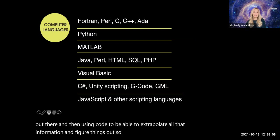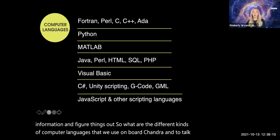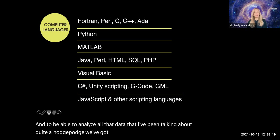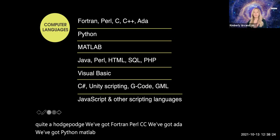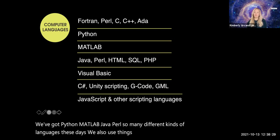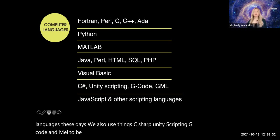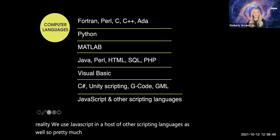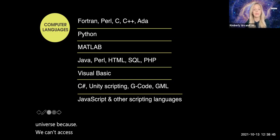So what are the different kinds of computer languages that we use on board Chandra and to talk to Chandra and to be able to analyze all that data that I've been talking about? Quite a hodgepodge. We've got Fortran, Perl, C, C++, we've got Ada, we've got Python, MATLAB, Java. These days we also use things like C-sharp, Unity scripting, G-code, and GML to be able to create those 3D models or virtual reality. So pretty much coding runs our understanding of the universe because we can't access Chandra any other way.